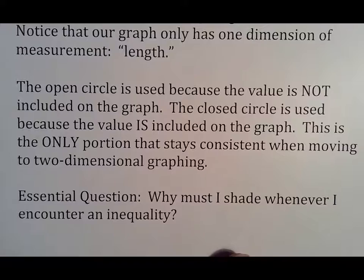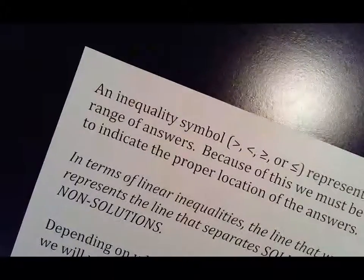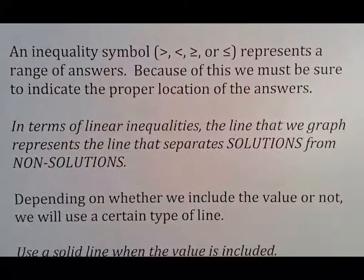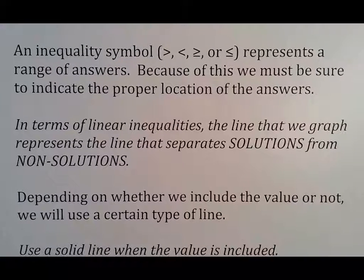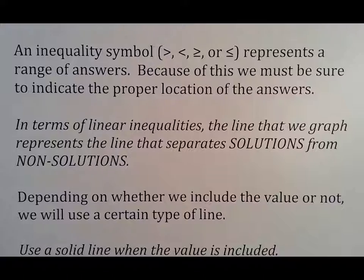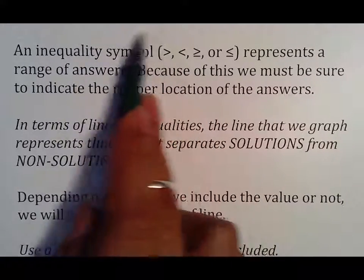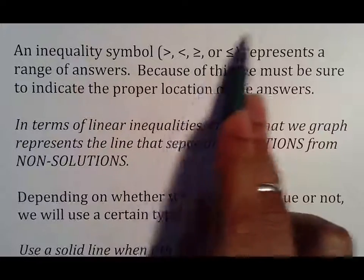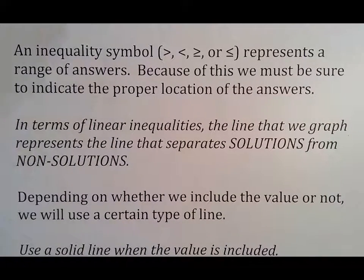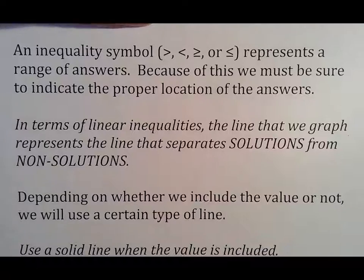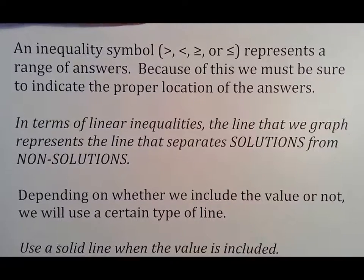Why must I shade when I encounter an inequality? Well, you've got to remember that an inequality represents a range of answers. This is because we must be sure to indicate the proper location of the answers. When you shade to the left of a number, you're telling the person everything on this side can be true, or everything on that side can be true. Whenever there's more than one thing that can make it true, you need to make sure you indicate that.